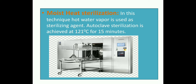Moist heat sterilization can be used for both porous and non-porous loads. This autoclave has confirmatory tests like the Bowie-Dick test and leak test that must be done prior to commercial sterilization processes. A benefit is that sterilization is achieved at relatively lower temperatures than dry heat sterilization, whereas some materials which cannot withstand temperatures above 100 degree Celsius cannot be sterilized by moist heat sterilization. For that purpose, we have to use cold sterilization methods.